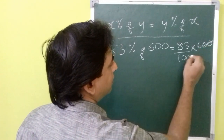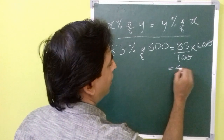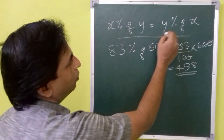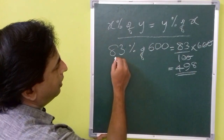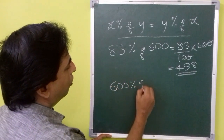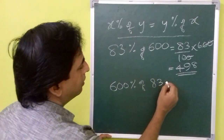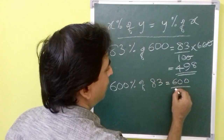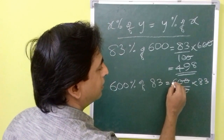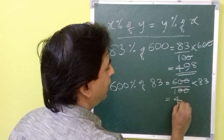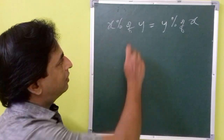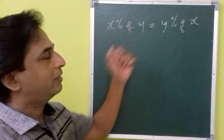That means 83 times 6, that is 498. Now let us examine the reverse process, that is y percentage of x. Let us bring 600 here and 83 there, so that will be 600 percent of 83. That is again 6 times 83, which is 498. That means this statement is true.